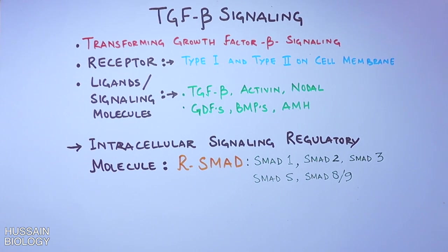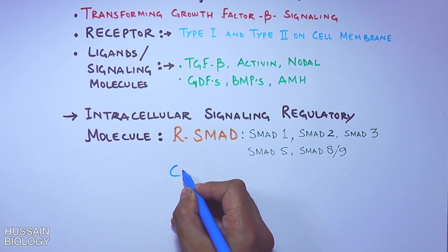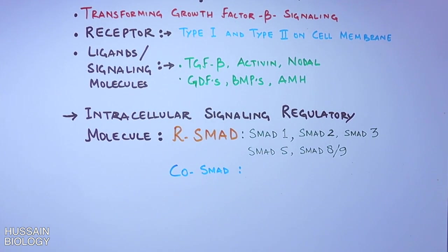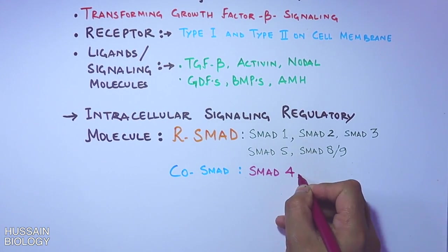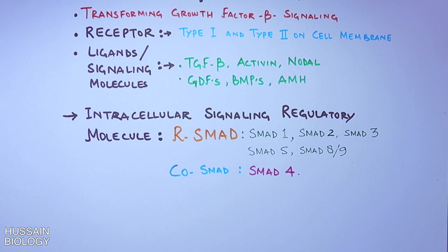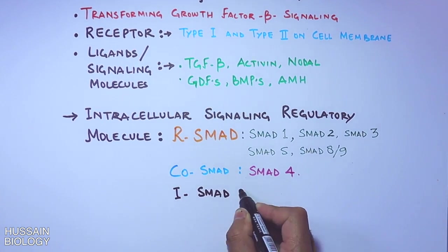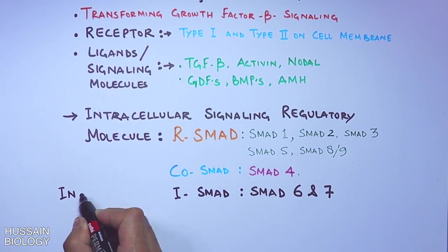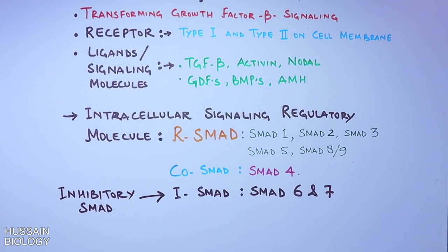Moving further, we also need one more SMAD molecule called Co-SMAD, and for this we have the SMAD4 molecule that will help drive the signaling pathway once R-SMADs are active. Also, SMAD6 and SMAD7 molecules are called inhibitory SMADs or I-SMADs.